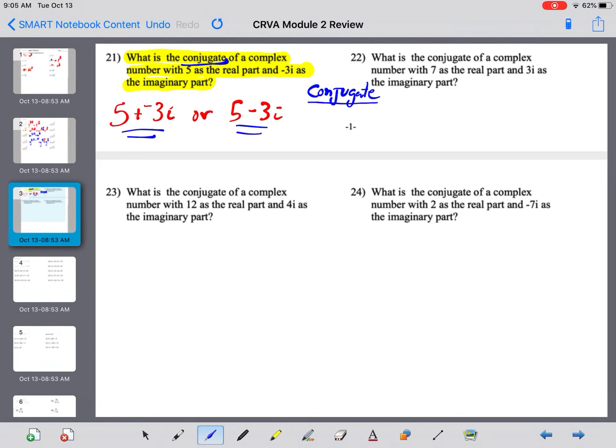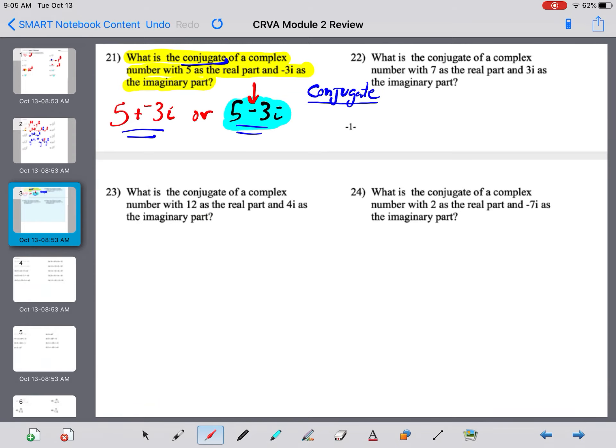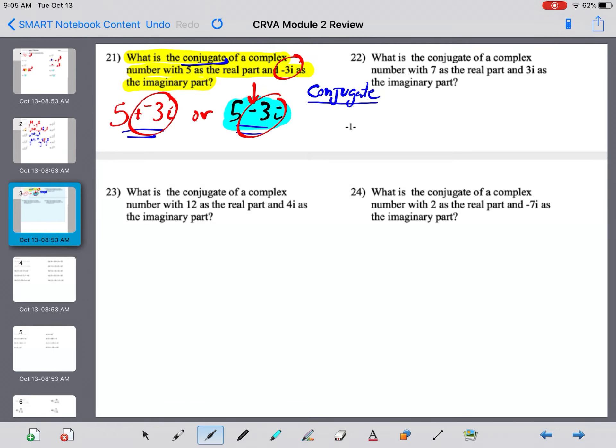And so, our conjugate will be, you copy that exactly as it is. So, I'm going to look at this right here and copy it except for you take this sign right here and change it to the opposite. So, this was a negative 3i for the imaginary part. That just becomes a positive 3i. So, it's going to be 5 plus a positive 3i.